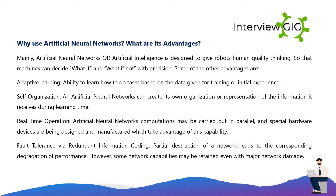Why use artificial neural networks? Artificial neural networks are designed to give machines human-quality thinking, so they can make decisions with precision. Key advantages include: adaptive learning — the ability to learn tasks based on training data or initial experience; self-organization — ANNs can create their own representation of information received during learning; real-time operation — computations may be carried out in parallel using specialized hardware; and fault tolerance via redundant information coding — partial destruction of a network leads to corresponding performance degradation, but some capabilities may be retained even with major damage.